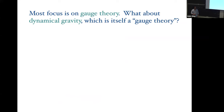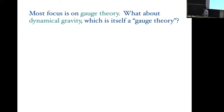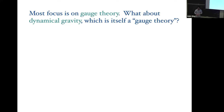Gravity is a notable exception where we don't know much about it in the extreme UV — we can speculate but don't know for certain. The vast body of work on generalized symmetry has really been around gauge theories or quantum field theories, but relatively little about gravity.